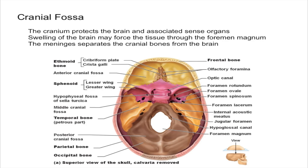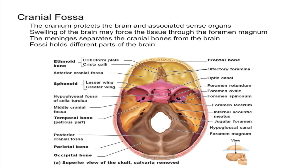The base is further divided into three separate regions that compose the cranial floor — essentially the lower part. The three parts are called fossa: you have the anterior cranial fossa, which is the front; the middle cranial fossa, which is the middle; and the posterior cranial fossa, which is the back.